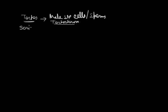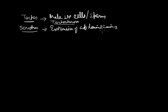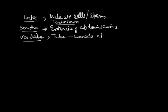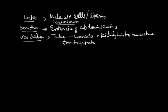The scrotum is an extension of the abdominal cavity which holds the testis and acts as a temperature regulator for optimum production of sperm. The vas deferens is a tube-like structure that connects the epididymis to the urethra for transporting sperm.